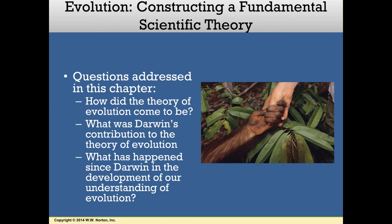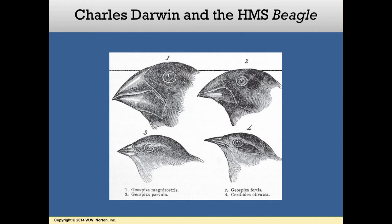Let's start by going back to 1831 and joining Charles Darwin on the HMS Beagle. Scientists start by making observations and asking questions, and the story of Charles Darwin is no different. In 1831, a young Charles Darwin, who was only 22 years old, joined the crew of the HMS Beagle for a five-year voyage around the world. The Beagle sailed from England around the tip of South America to the Galapagos Islands, around the southern coast of Australia and Africa, and back to England. During this journey, Darwin collected thousands of samples of plants, animals, fossils, and rocks.